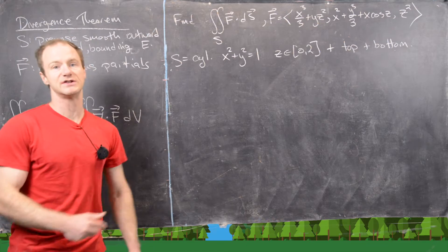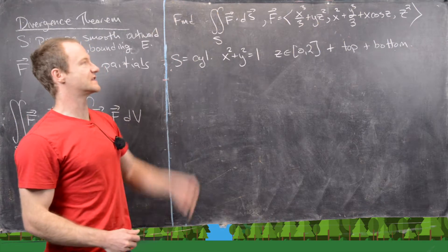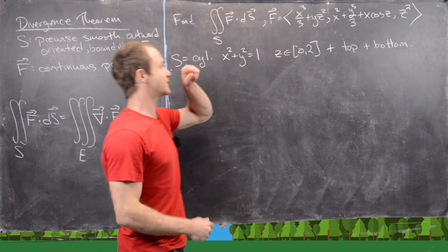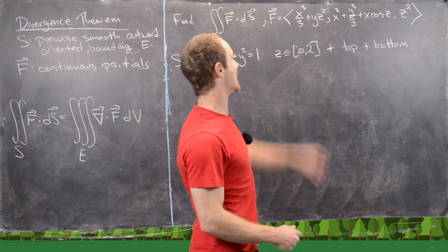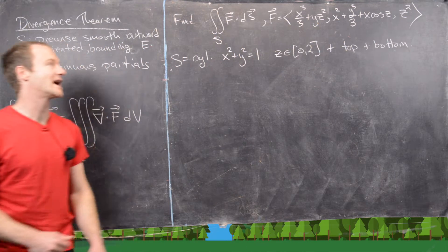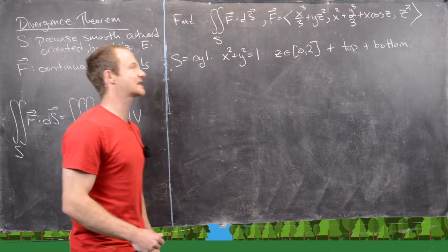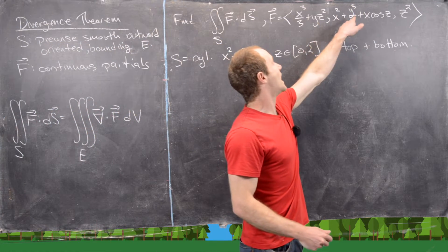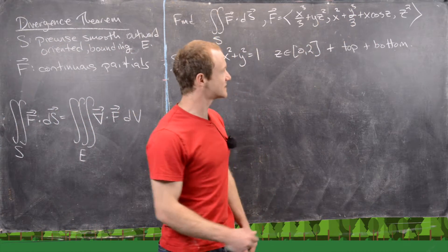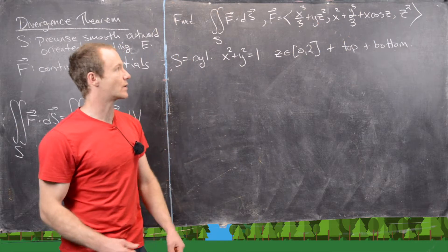The example we want to do is this one. So we want to find the surface integral of this vector field F, which is defined component-wise by x cubed over three plus yz squared plus x squared plus y cubed over three plus x cosine z comma z squared.